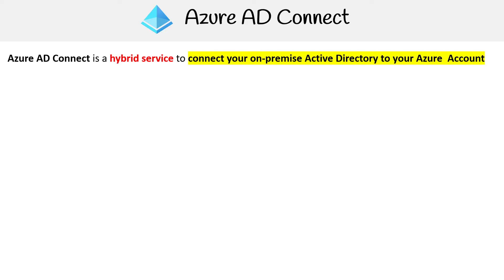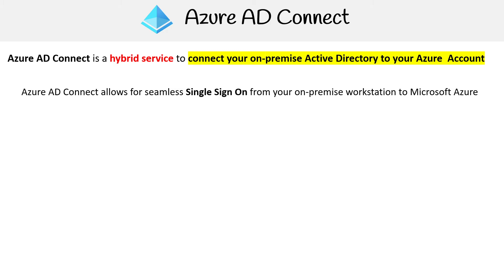Let's take a look at Azure AD Connect. This is a hybrid service that is used to connect your on-premise Active Directory to your Azure account. Azure AD Connect allows for seamless single sign-on from your on-premise workstations to Microsoft Azure.